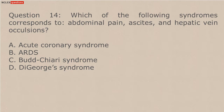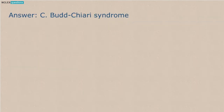Question 14: Which of the following syndromes corresponds to abdominal pain, ascites, and hepatic vein occlusion? A. Acute Coronary Syndrome. B. Hodgkin's Syndrome.